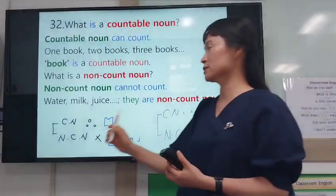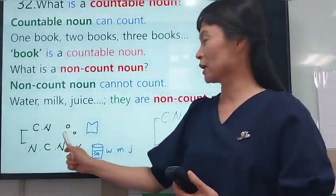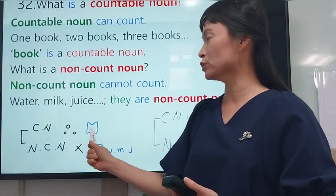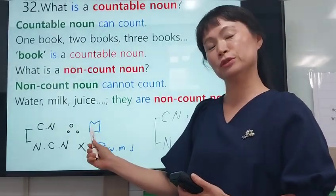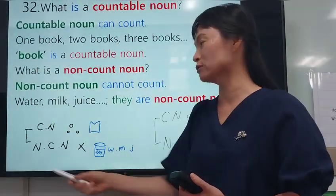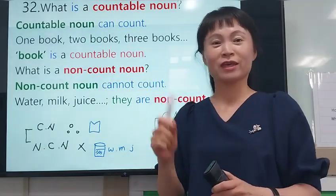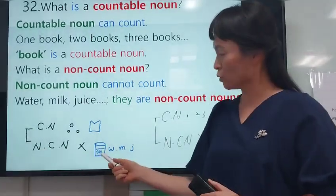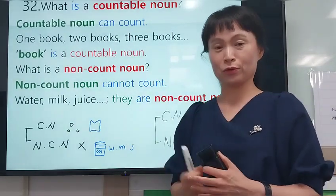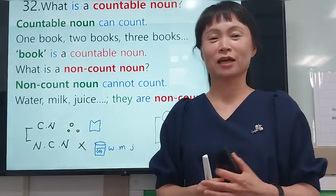So to describe again: countable nouns can be counted — one, two, three. One book, two book, three book. Book is a countable noun. Non-countable nouns cannot be counted — water, milk, juice, and so on. They are non-countable nouns.